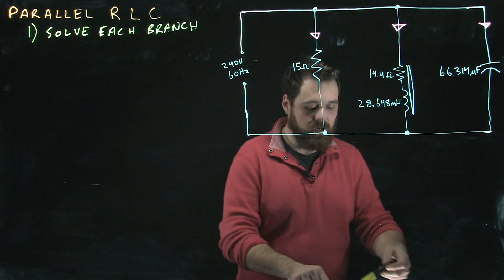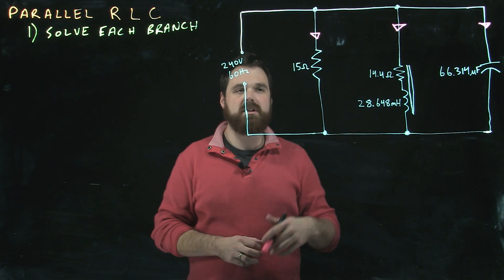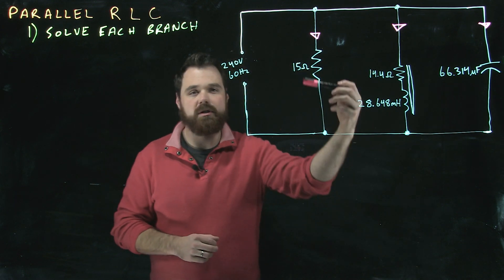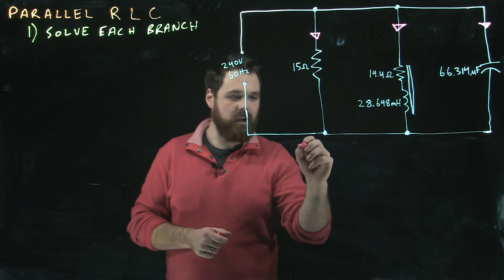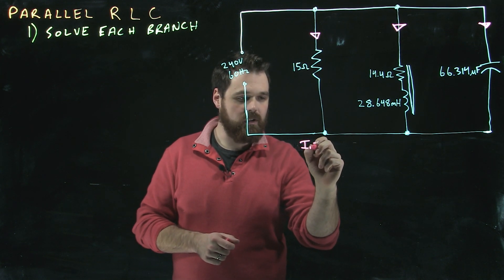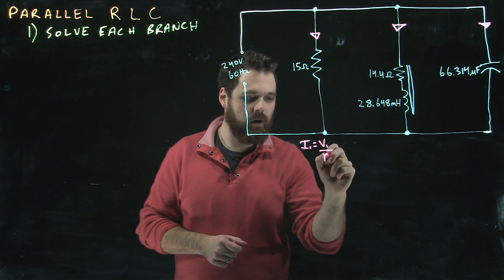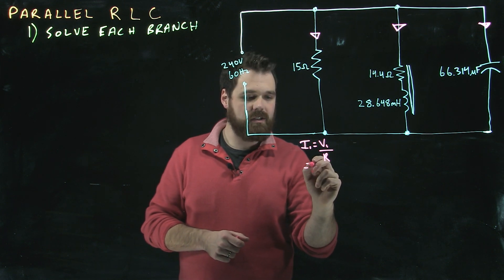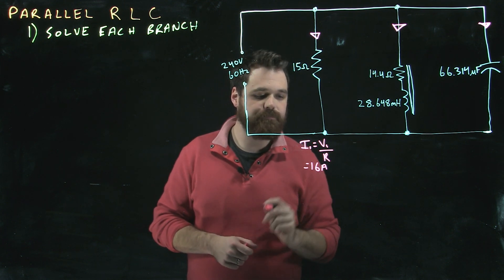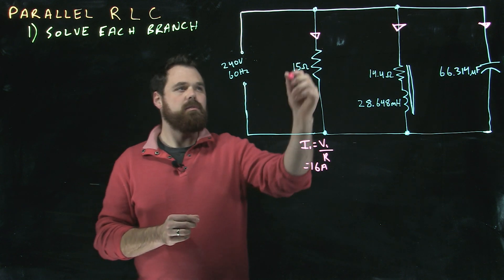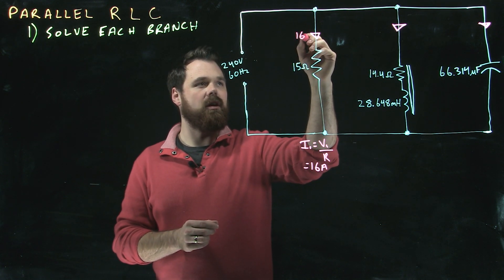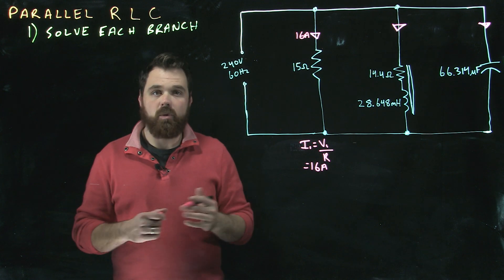If we're trying to solve each branch, we can figure out the current that is flowing in each branch. In this case, I've got 240 volts and a 15 ohm resistor. I can go I1 equals V1 over R. In this case, I get 16 amps. Perfect. Now that's easy because it is a resistor.